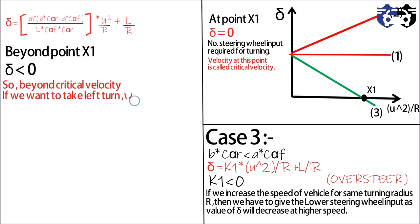So from here we are on the following conclusions: if b*C_alpha_r > a*C_alpha_f, then the car will understeer. If b*C_alpha_r < a*C_alpha_f, then car will oversteer, and we have to give less steering wheel input for turning at higher speeds.